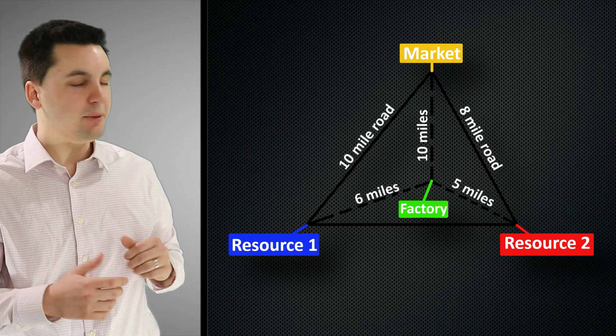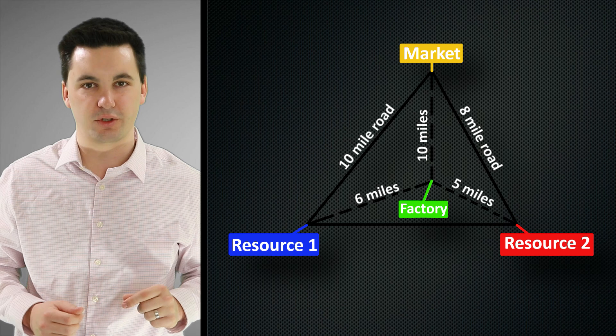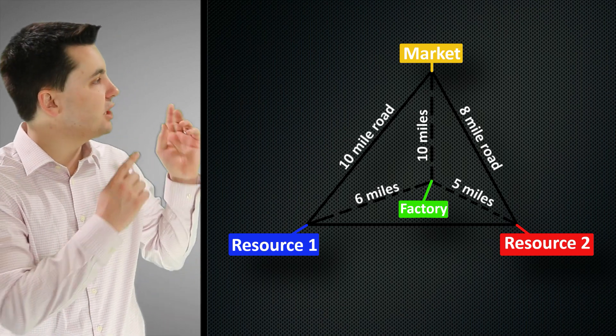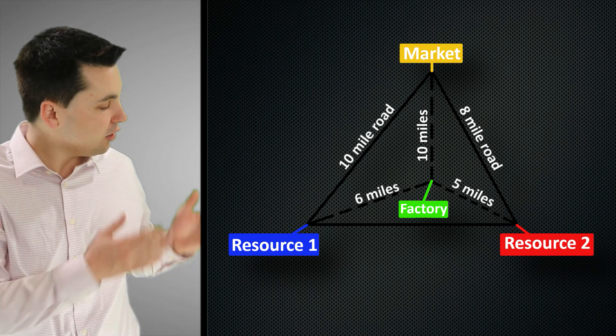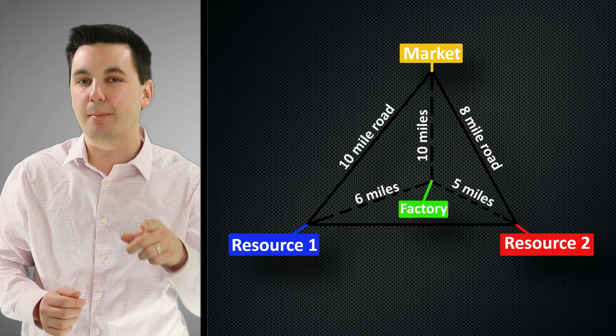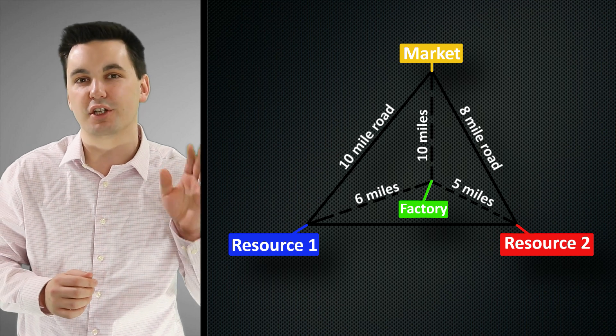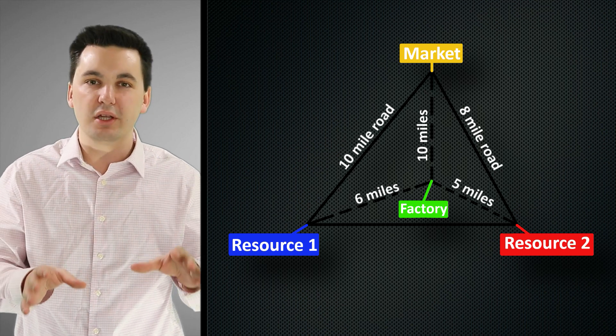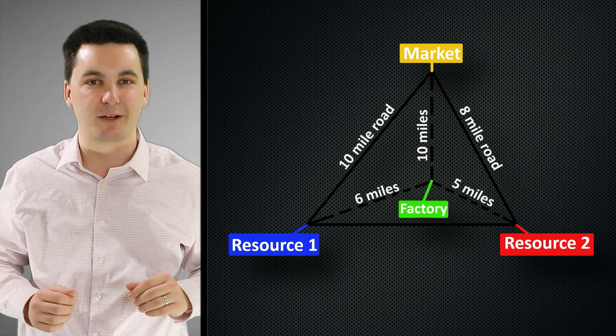We can see that the least cost theory ends up creating a triangle. And inside this triangle would be the location of production. We can see that we have the location of raw resources that would be used to be able to produce our product, and also the market in which our products will be sold. And again, remember, this theory is using bulk reducing, bulk gaining, agglomeration, and cost of labor to determine the ideal location for our production within this model.